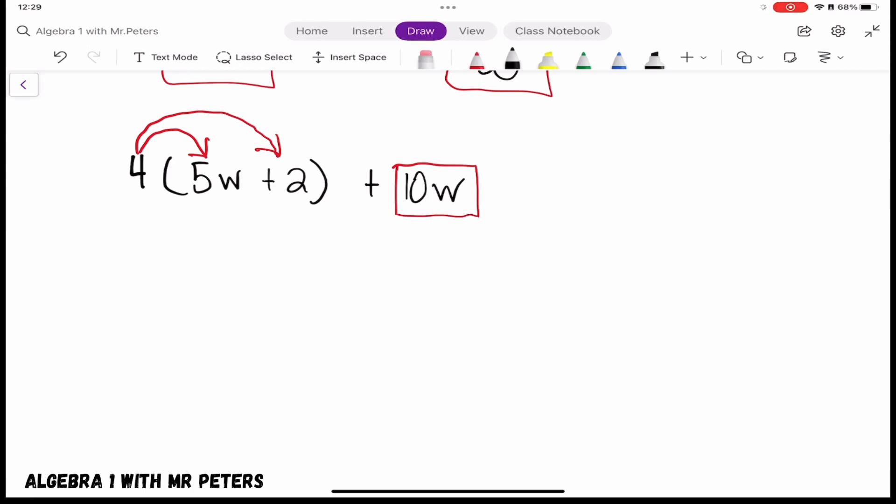So we're going to set this up. We have 4 times 5w plus 4 times 2, and then we're going to add 10w at the end. So when we go through and distribute, we have 20w plus 8 plus 10w. And I'm noticing something when it comes to my like terms.